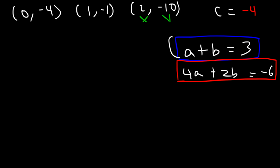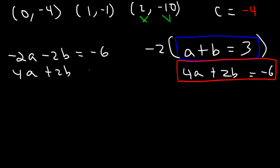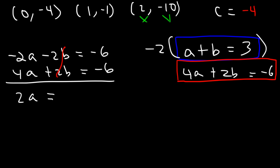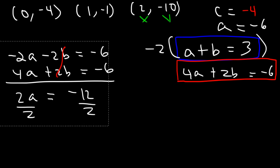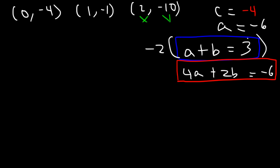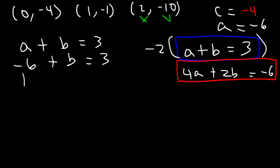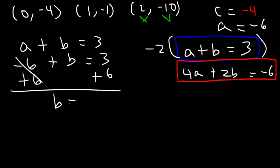Multiply the first equation by negative 2: negative 2a minus 2b equals negative 6. Adding to 4a plus 2b equals negative 6, the b terms cancel. Negative 2a plus 4a is 2a, and negative 6 plus negative 6 is negative 12. Dividing by 2, a equals negative 6. Substituting back, negative 6 plus b equals 3, so b equals 9.